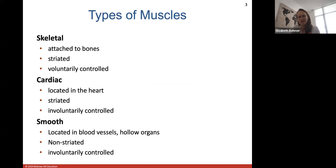We have different types of muscles — different types of muscle tissue depending on where they're located. Skeletal muscle tissue is found attached to all of your bones. It will have those zebra stripes or striations, and it will be voluntarily controlled, meaning you control when you move your skeleton and when those skeletal muscles contract to move the bones of your body.